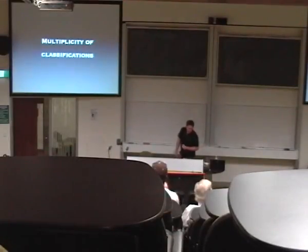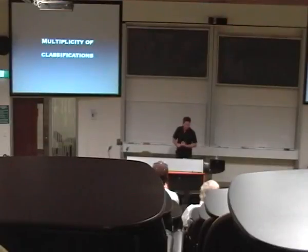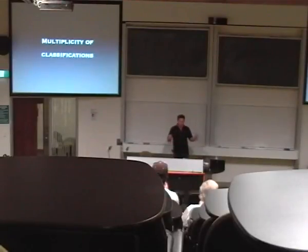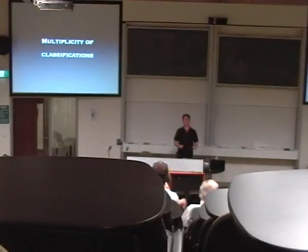So it's fair to say that there are a multiplicity of classifications in Australia, which is something to keep at the forefront of our minds when people say that the internet should be regulated like offline media. Which offline media? There are lots of them. Each has their own classification system, each has their own incompatible set of ratings, and different countries have different things. So what exactly do people mean when they say that the internet should be treated like the offline world?